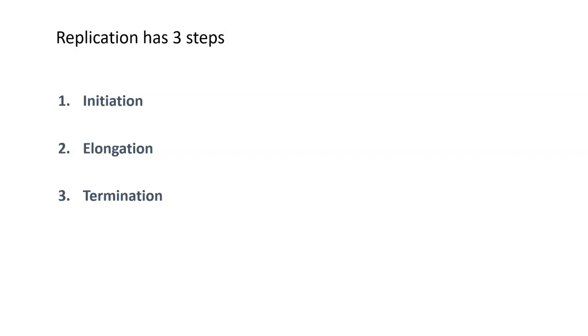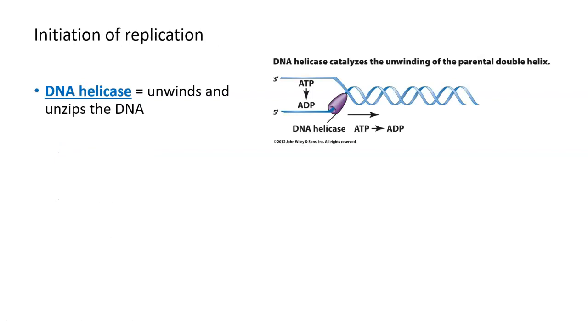DNA replication has three steps: an initiation step or start step, an elongation step or phase where the DNA is synthesized, and a termination phase where the whole process ends. We're going to first start by talking about what happens during initiation of replication, or all of the events that get replication started.